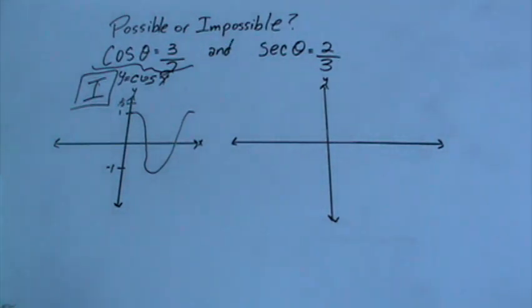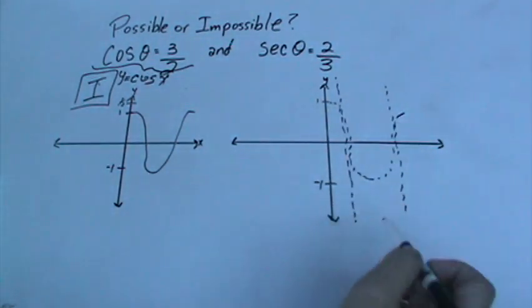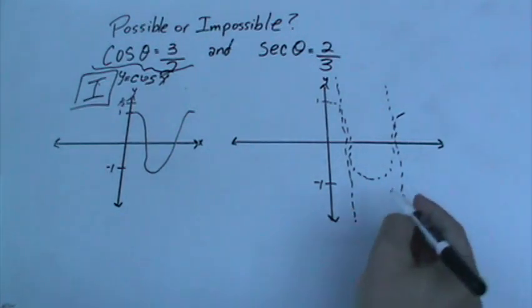So now secant. What is the graph of secant look like? Remember to graph secant we first have to graph cosine. Then we draw the asymptotes for cosine and then the max and mins would go in the opposite direction.